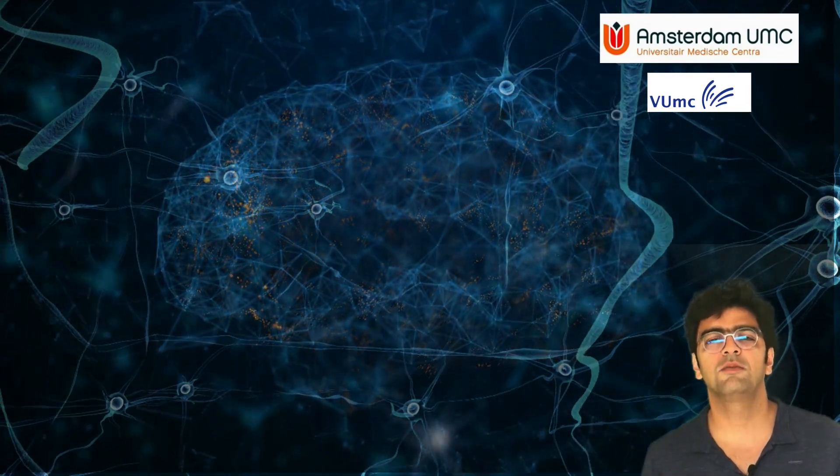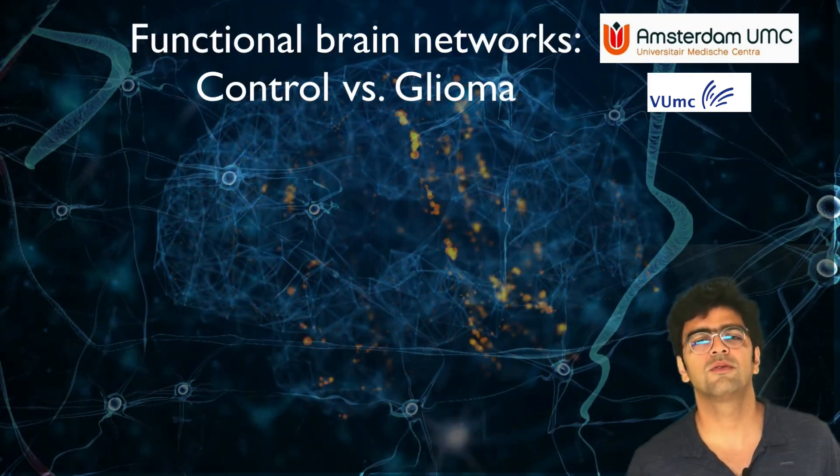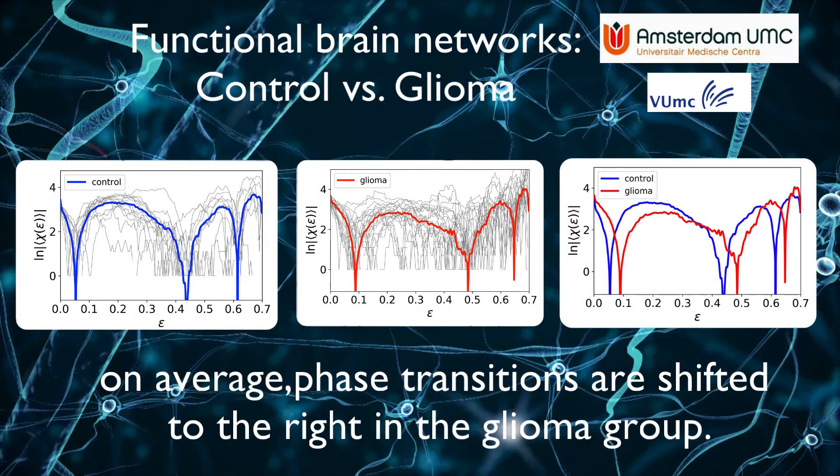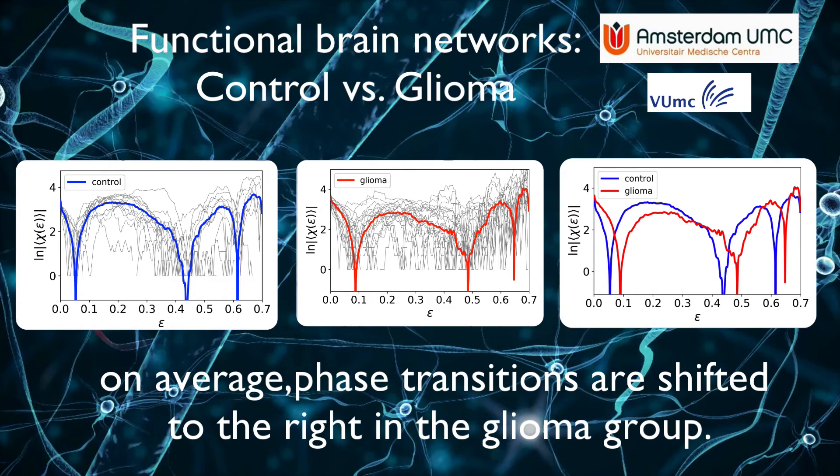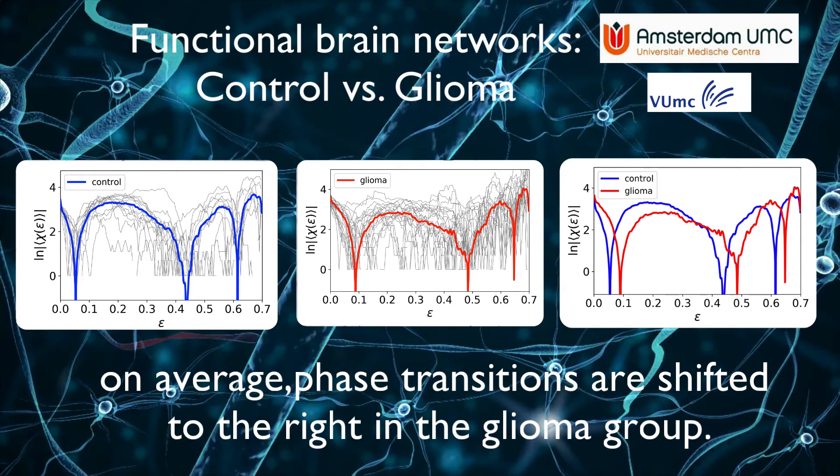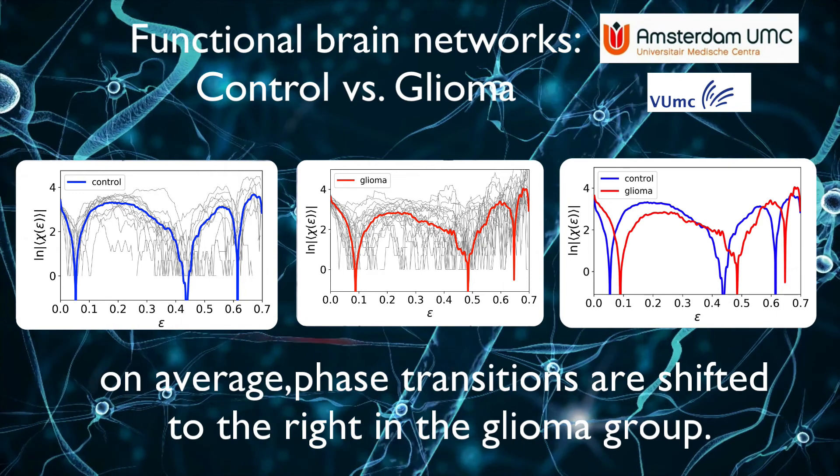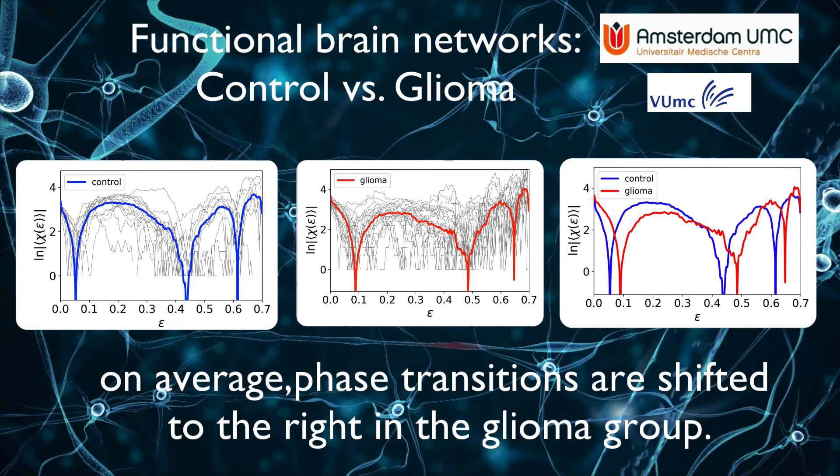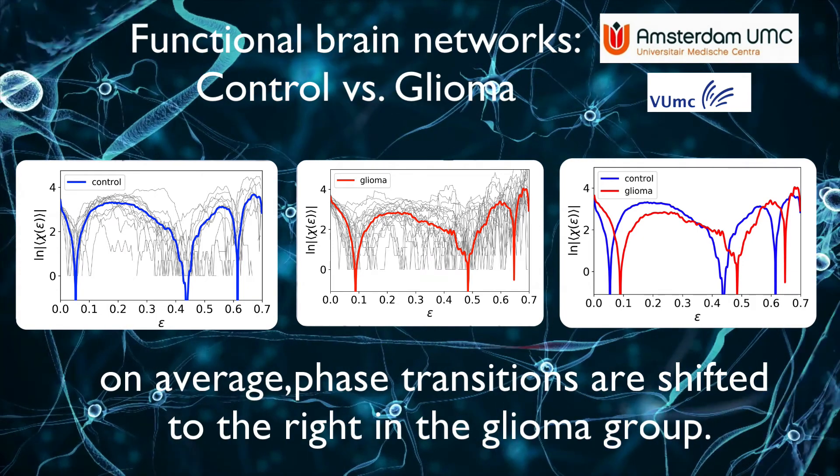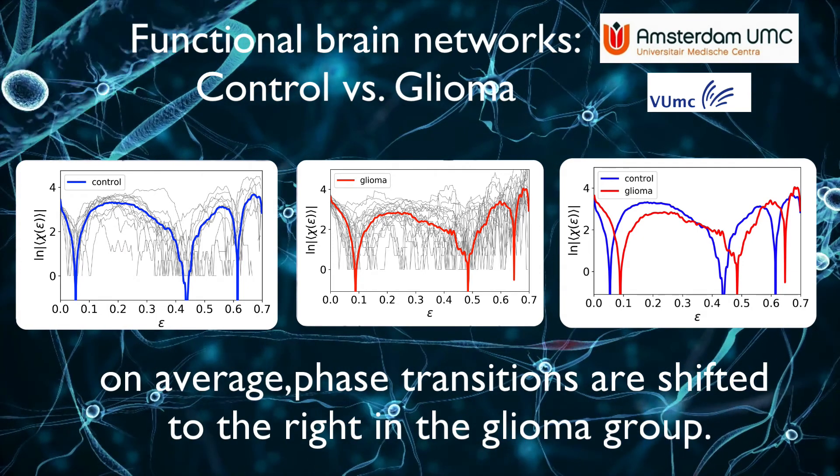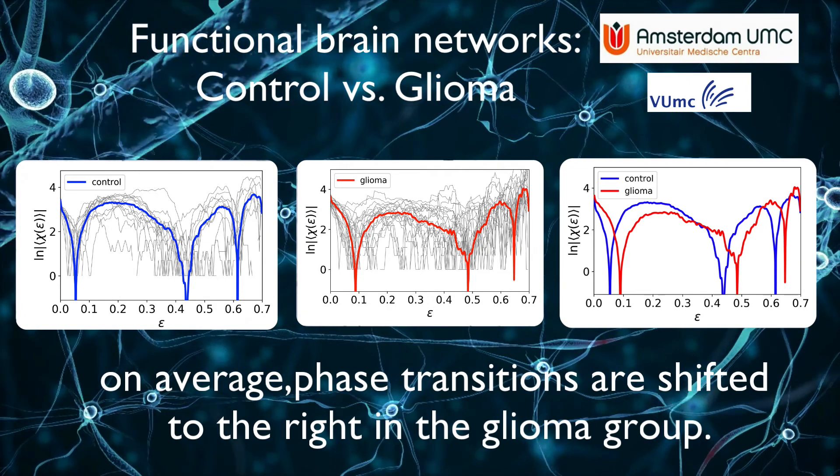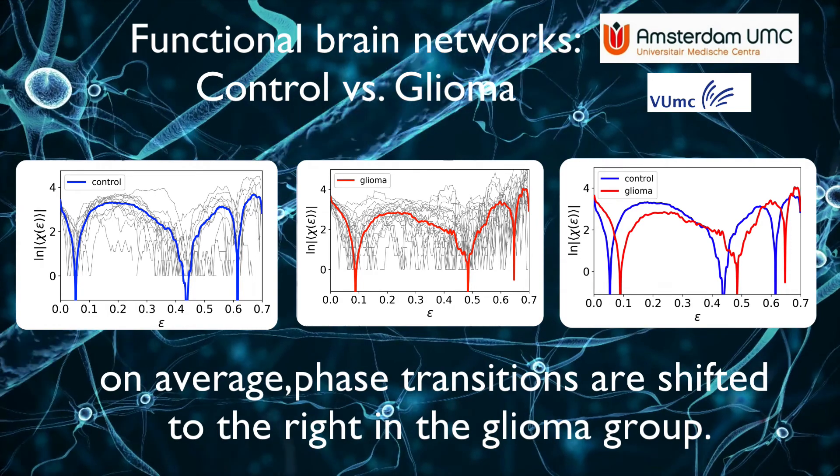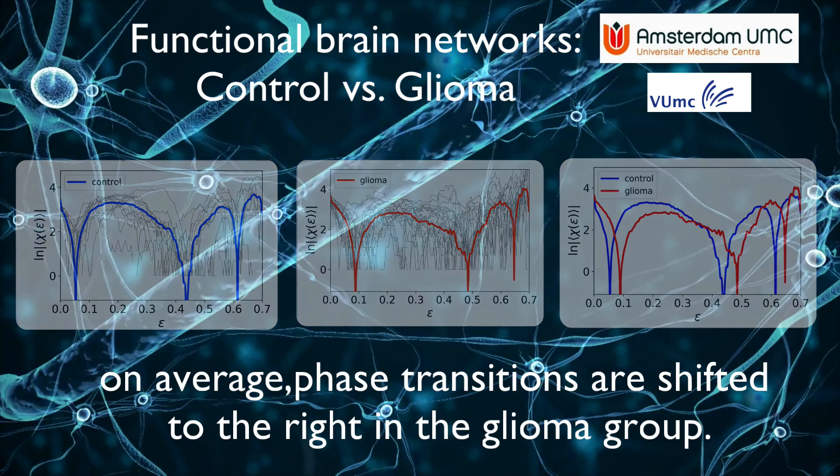Let's now compare our results between glioma and controls. By comparing the results of both groups superposed, we see that on average, the phase transitions are shifted to the right in the glioma group. Therefore, we can interpret this shift as a possible reorganization of correlation patterns in the functional brain networks of the glioma group. Thus, our results provide paradigmatic evidence for the use of topological phase transitions as topological biomarkers in functional brain networks.